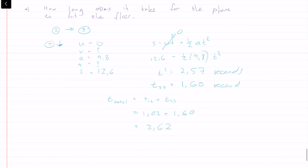For fun, you can try the alternate method: solve for v first between points 2 and 3, then solve for time t from that velocity.